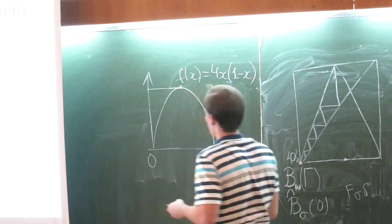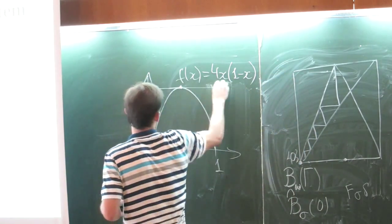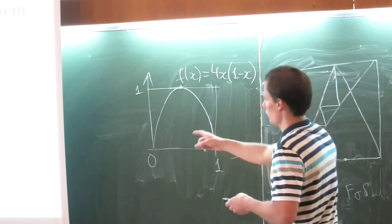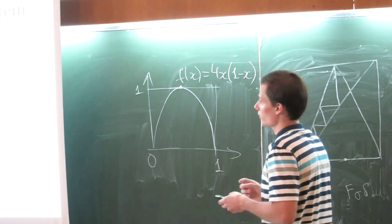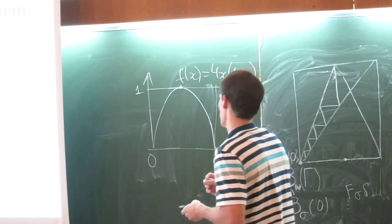The maximum of this parabola is 1, so it is really the mapping of an interval 0,1 to itself. And then we may study the iterations of any point.